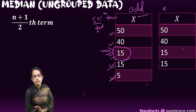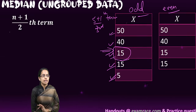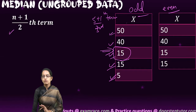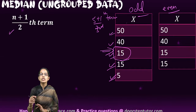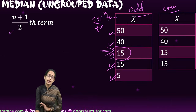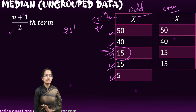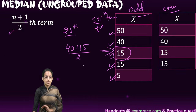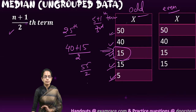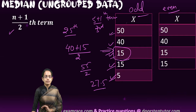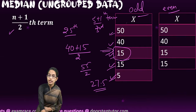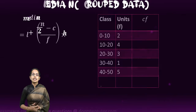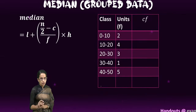What if the data is even? When there is even data, we again take the (n+1)/2 th term. With four values 50, 40, 15, and 15: (4+1)/2 = 2.5th term. That means I take the average of the middle two values: (40 + 15) ÷ 2 = 55 ÷ 2 = 27.5. So 27.5 is the median for this ungrouped even-numbered dataset.